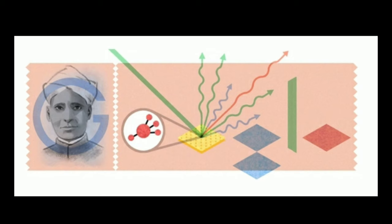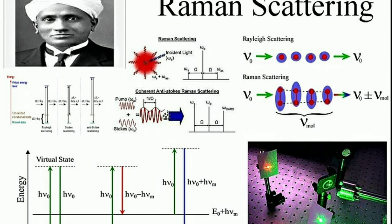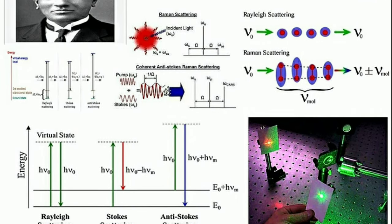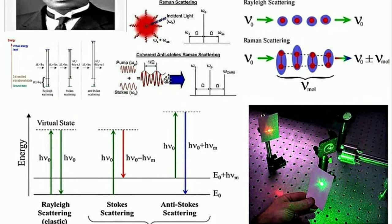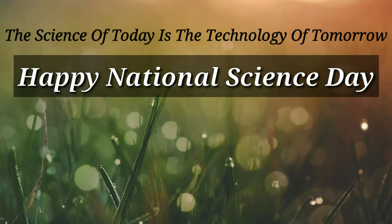When a beam of light traverses a dust-free transparent sample of a chemical compound, a small fraction of the light emerges in directions other than that of the incident beam. Most of this scattered light is of unchanged wavelength, but a small part has wavelengths different from that of the incident light — its presence is a result of the Raman Effect.